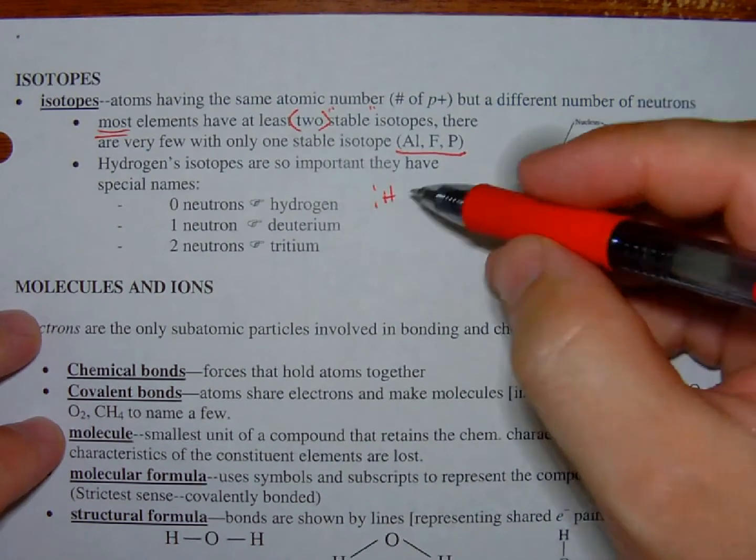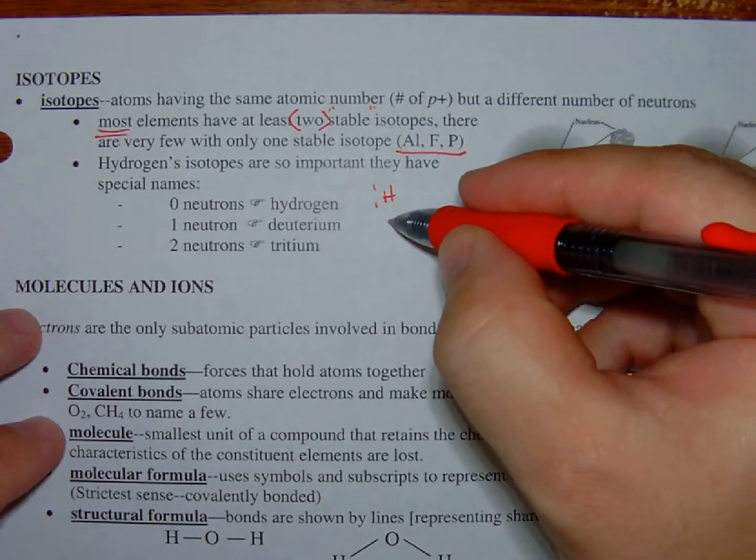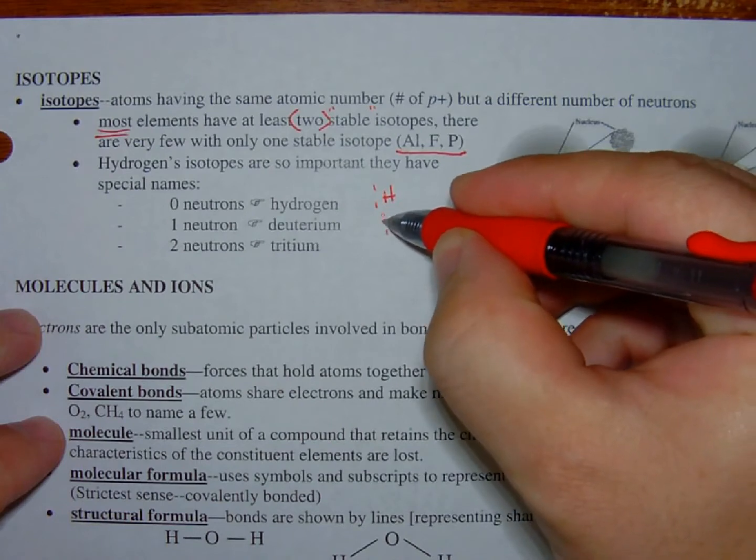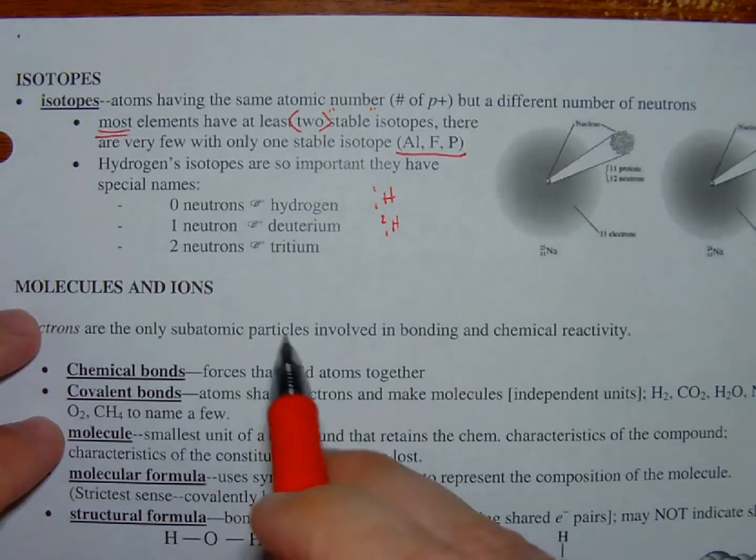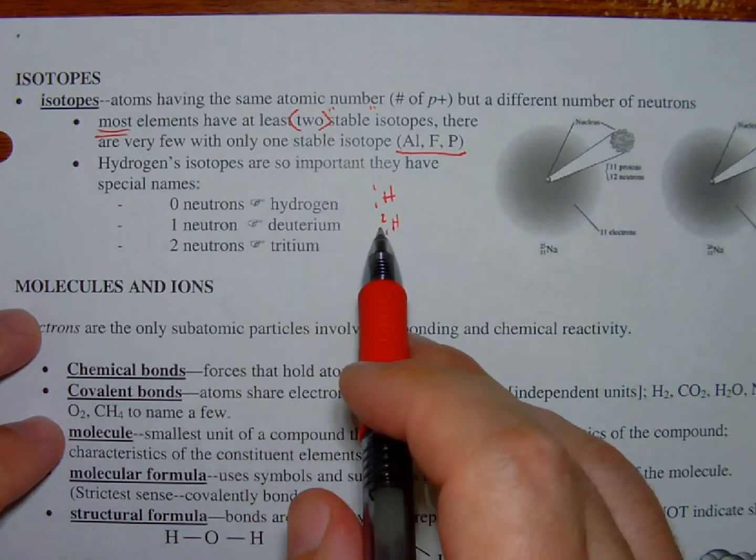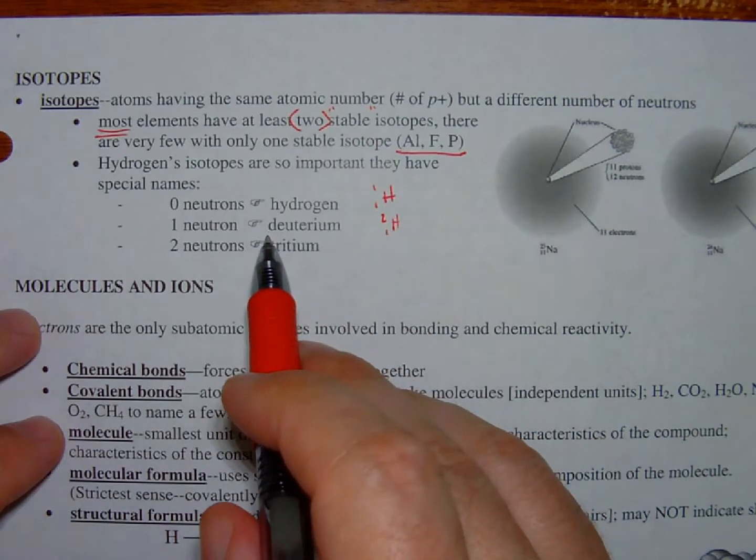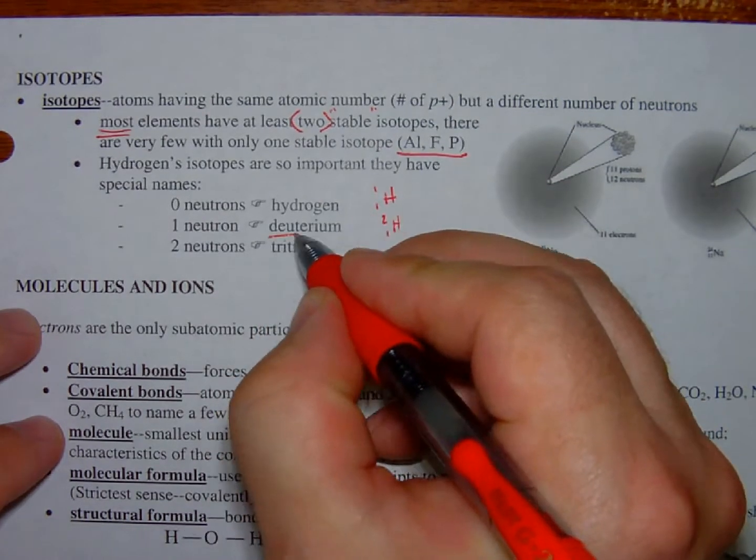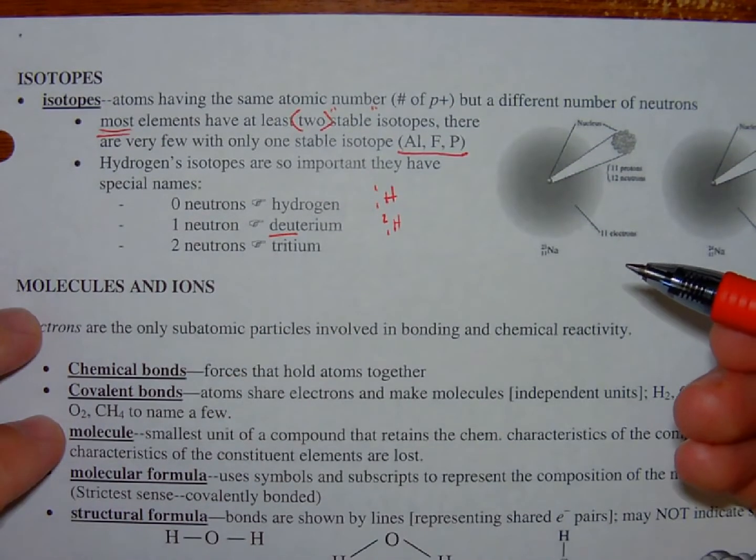But if we add one neutron, so now we have this. This is called deuterium because it has a mass of two. If you didn't know, in French, deux means two.